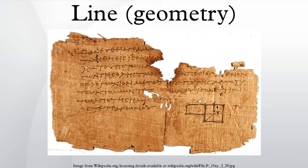In an axiomatic formulation of Euclidean geometry, such as that of Hilbert, a line is stated to have certain properties which relate it to other lines and points. For example, for any two distinct points, there is a unique line containing them, and any two distinct lines intersect in at most one point. In two dimensions, i.e., the Euclidean plane, two lines which do not intersect are called parallel. In higher dimensions, two lines that do not intersect may be parallel if they are contained in a plane, or skew if they are not. Any collection of finitely many lines partitions the plane into convex polygons, known as an arrangement of lines.